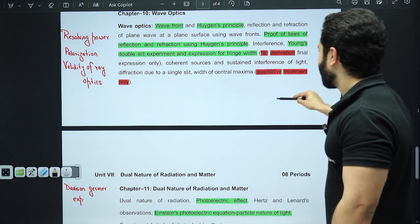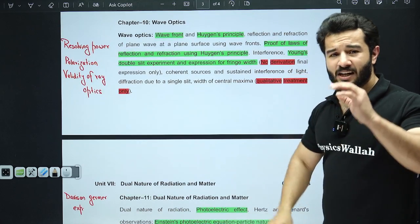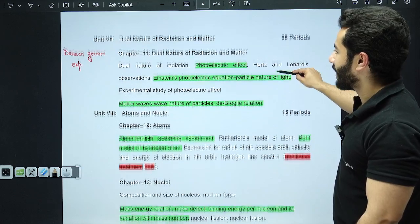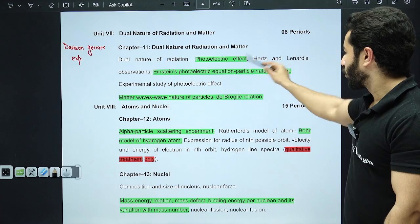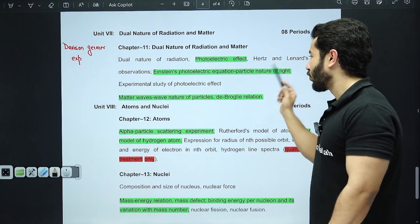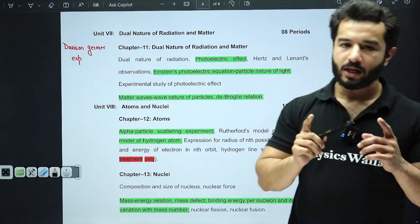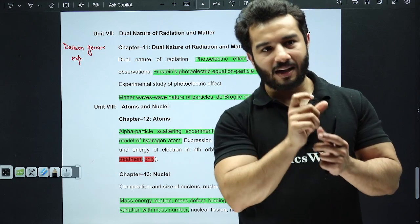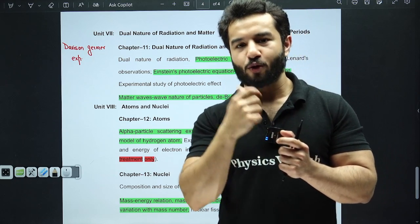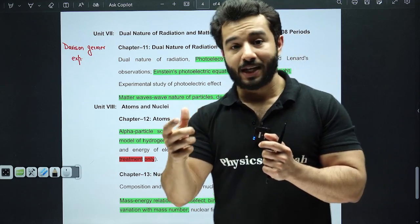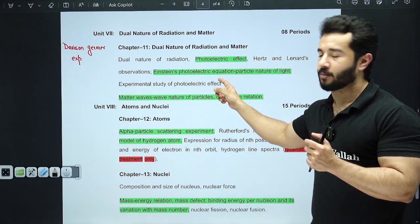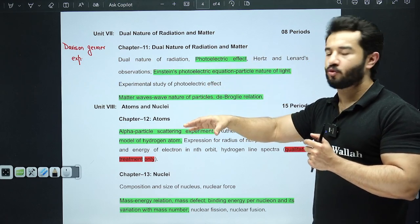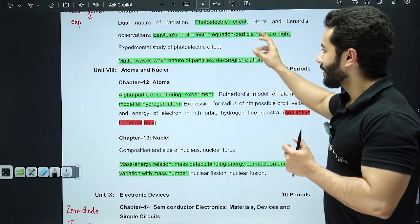And YDSE, you don't have to worry about the fringe width derivation. You just have to remember its formula—its formula is very simple: λD/d. That's it. So wherever no derivation, life is easy. Other than that, resolving power has been deleted, polarization has been deleted, validity of ray optics has been deleted. Diffraction—only formula is going to be asked. Moving on, dual nature of radiation and matter: Davisson-Germer experiment is being deleted.